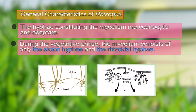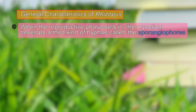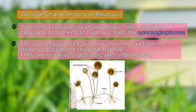When the reproductive phase sets in, in addition to stolon and rhizoidal hyphae, a third set of hyphae appears — known as sporangiophores. These sporangiophores arise in tufts in the air from the stolon, opposite the rhizoidal hyphae. They are negatively geotropic and unbranched, growing in the direction opposite to the rhizoidal hyphae.